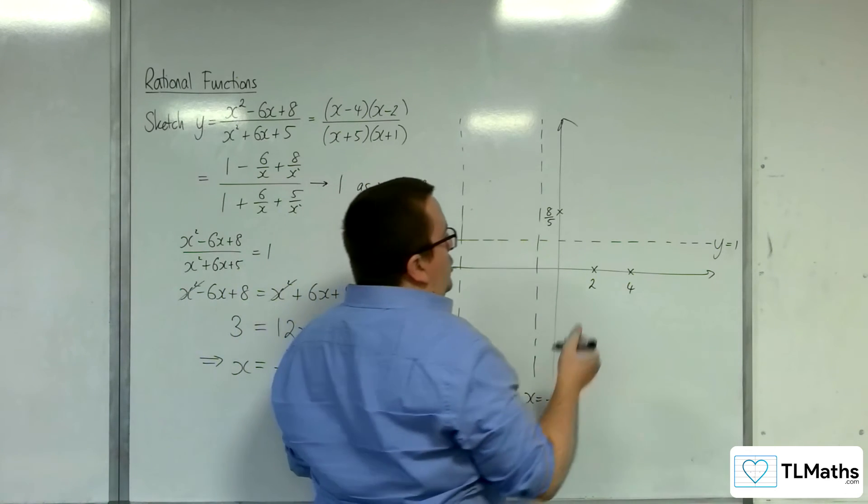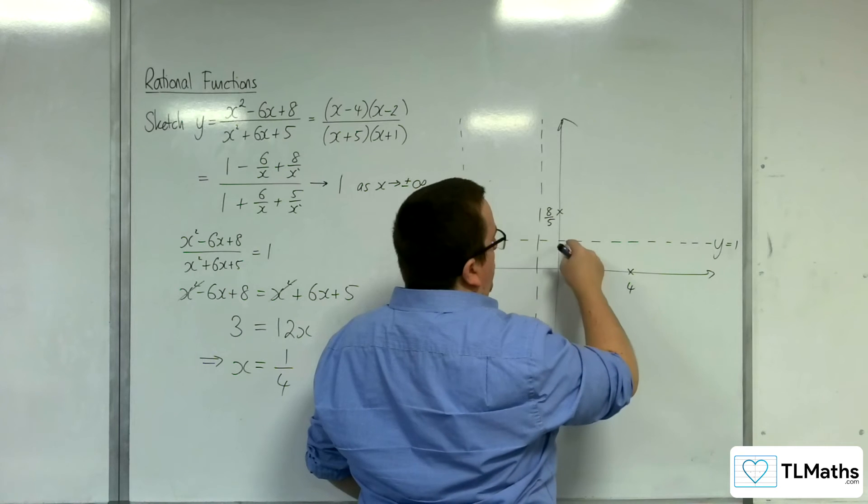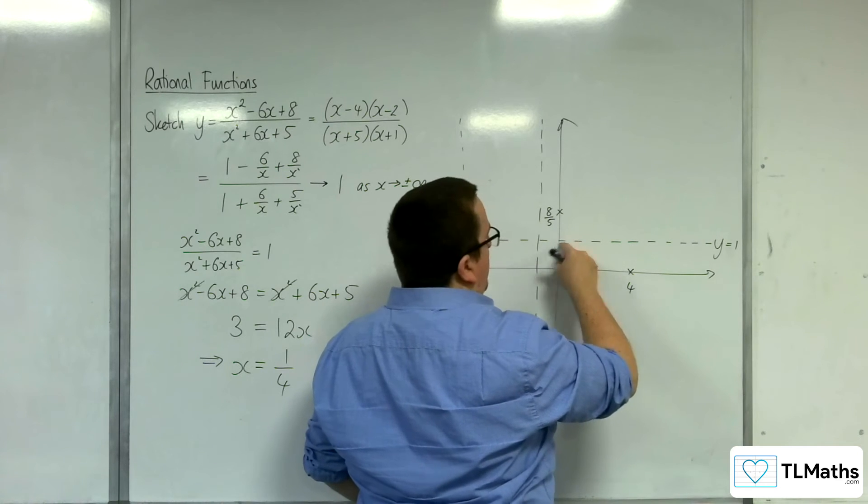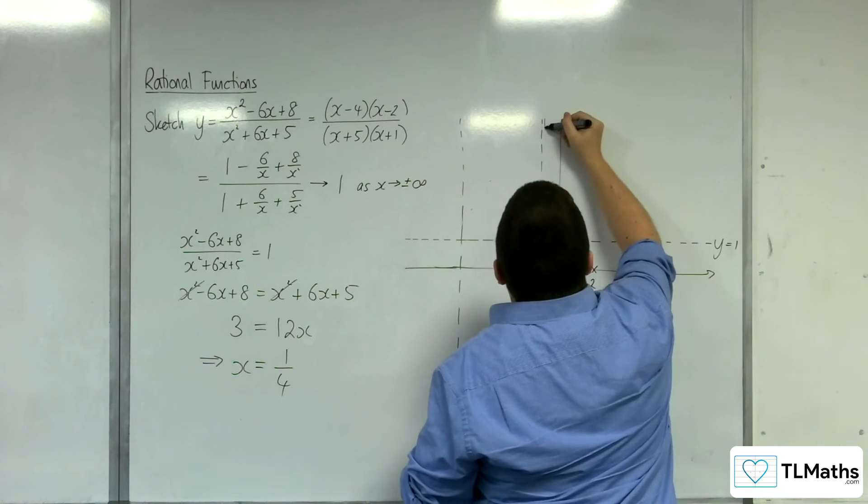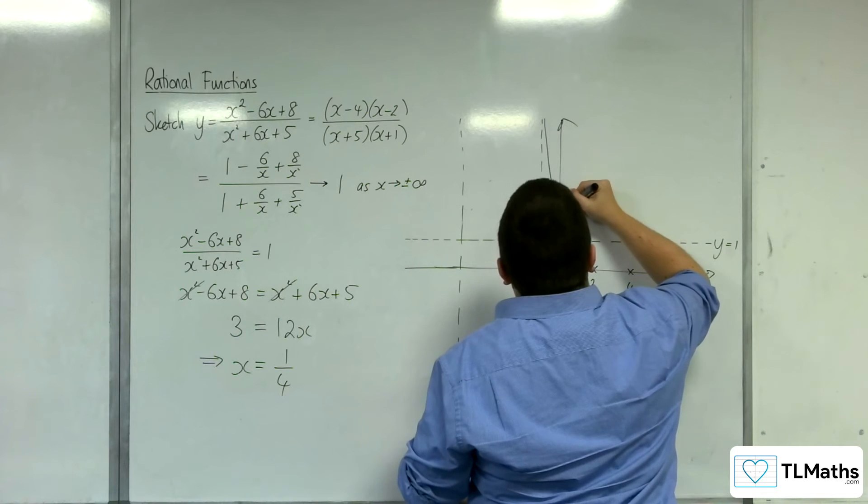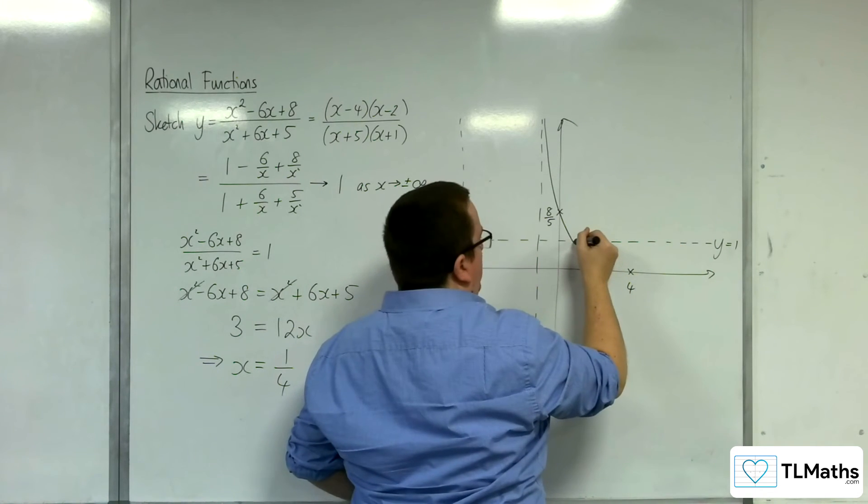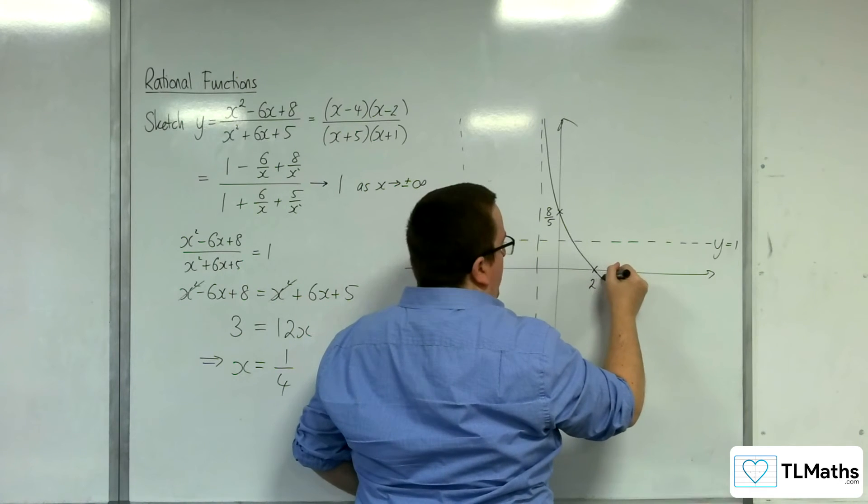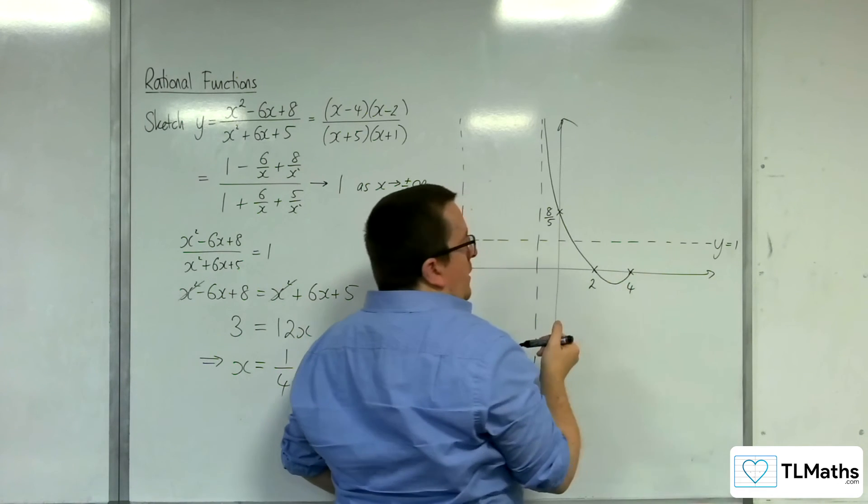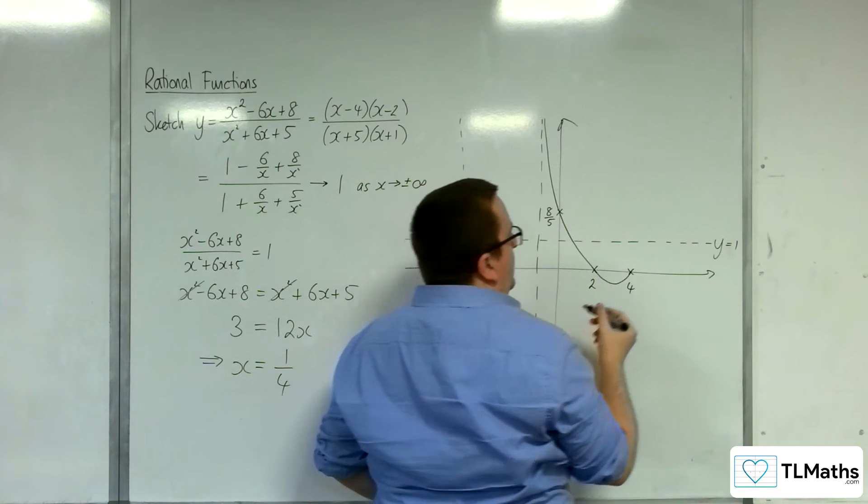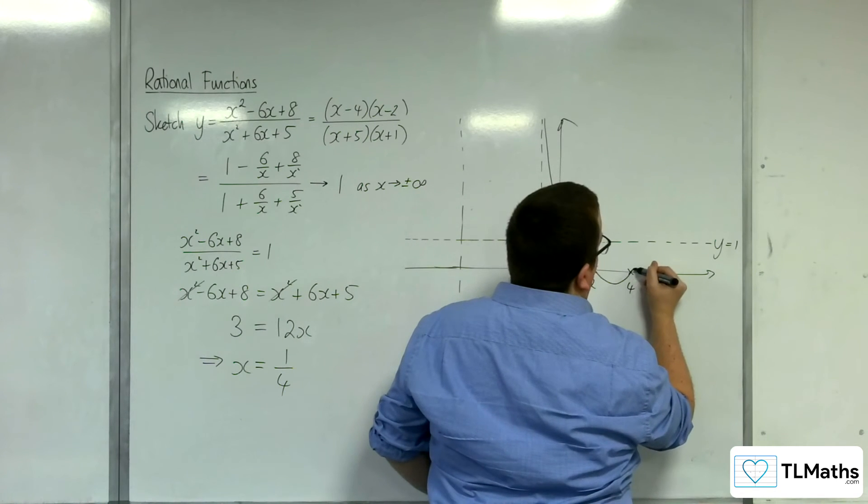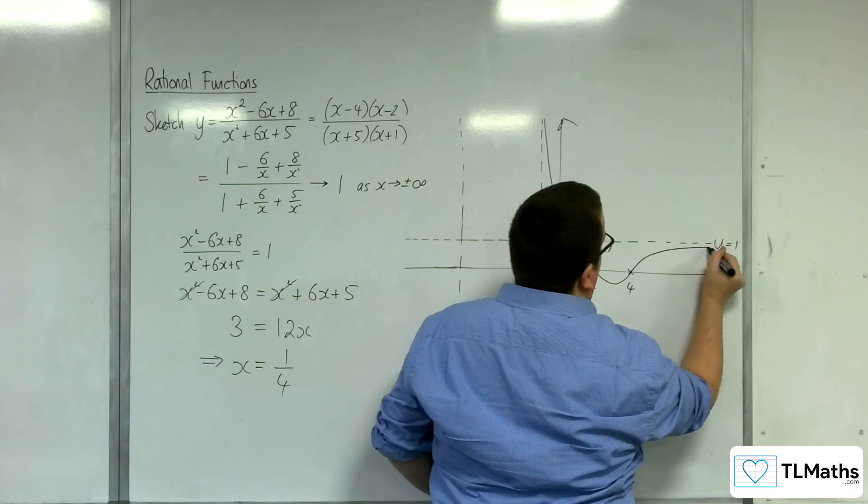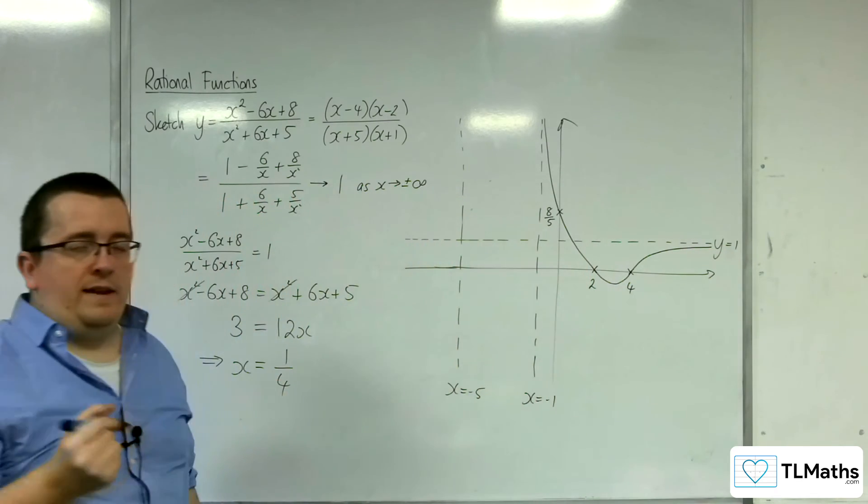So it's actually only one point of intersection, which is going to be here. So the curve comes down through that point, through x is a quarter, through x equals 2 on the x-axis, then back round through x equals 4 on the x-axis. And then we know that the curve has to tend towards the horizontal asymptote in that way.